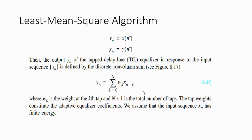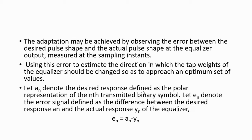Least mean square (LMS) algorithm. X of N is the input and Y of N is the output. The output Y(N) is defined by the discrete convolution sum: Y(N) = summation K equal to 0 to N of W(K) · X(N−K). Here W(K) is the weight of the K-th tap, and N+1 is the total number of taps used. The tap weight is considered the adaptive equalization coefficient. The input sequence H(N) has finite energy. Adaptation is achieved by observing the error between the desired pulse and the actual pulse at the receiver output, and the equalizer changes its weight depending upon the error produced.